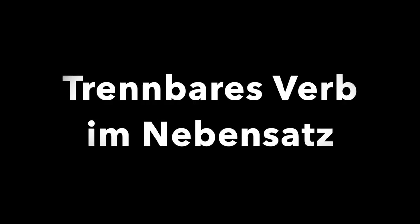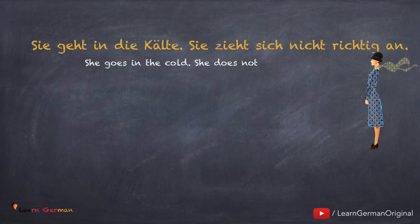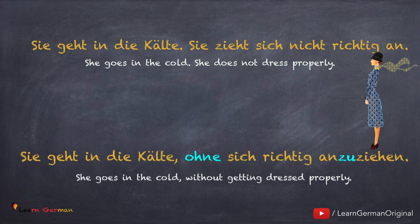Was passiert, wenn wir ein trennbares Verb im Nebensatz haben? Hier ist ein Beispiel: Sie geht in die Kälte, sie zieht sich nicht richtig an. Das trennbare Verb hier ist anziehen. Mit ohne zu sagt man: Sie geht in die Kälte, ohne sich richtig anzuziehen. Zu steht zwischen Präfix und Verb im Infinitiv am Ende.